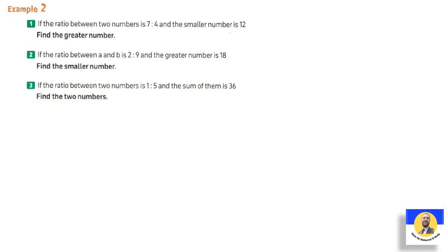Another example: if the ratio between two numbers is 7 to 4 and the smaller number is 12, find the greater number. This ratio means we had two numbers, and when we simplified them, we got 7 to 4. The smaller number is 12. Which is smaller, 7 or 4? Four. So 4 was 12. How does 4 become 12? Multiply by 3. So 7 by 3 equals 21.